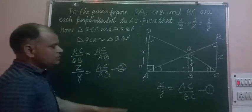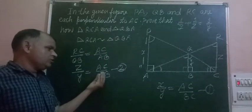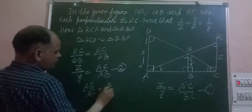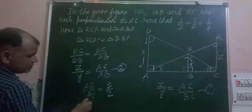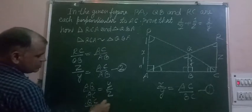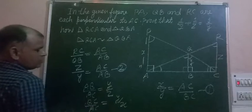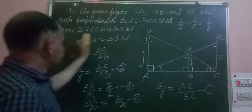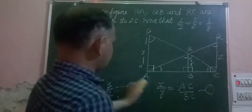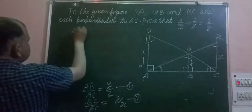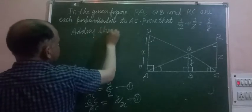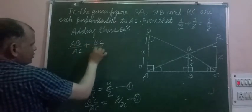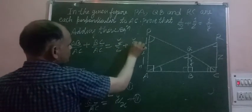Now we have two equations: x over y equals AC over BC, and z over y equals AC over AB. We reverse these equations to get BC over AC equals y over x, and AB over AC equals y over z. Now we add these two equations.